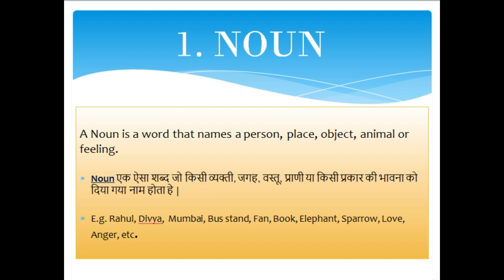The first part of speech is Noun. A noun is a word that names a person, place, object, animal or feeling. Like Rahul and Divya are the names of persons. Mumbai and bus stand are the names given to places. Fan and book are objects. Elephant and sparrow are birds and animals names.